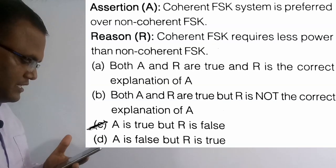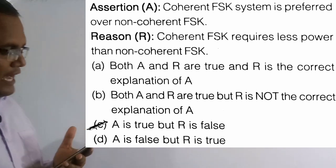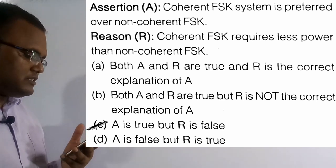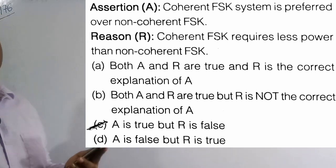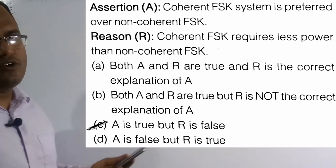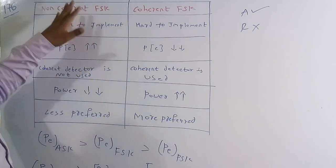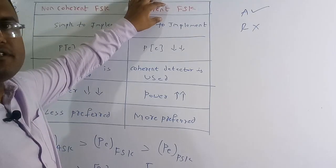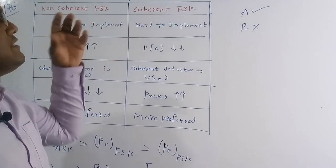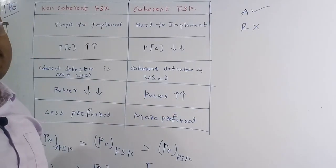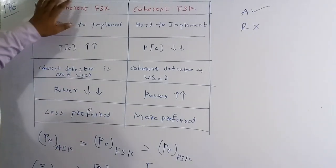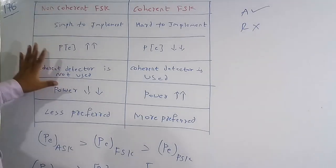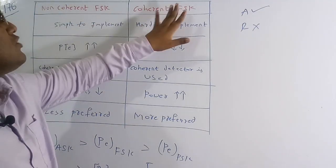Now solving question 176, an assertion-reason type question. Assertion A: coherent FSK is preferred over non-coherent FSK. Reason R: coherent FSK requires less power than non-coherent FSK. The correct option is: assertion is correct and reason is false. In coherent FSK, integer number of cycles are produced in the carrier signal. In non-coherent FSK, integer cycles are not guaranteed. Coherent FSK uses a coherent detector circuit, making it more complex to implement.